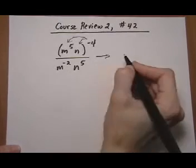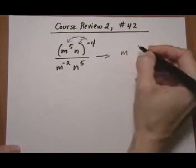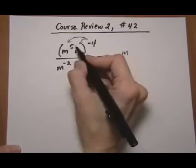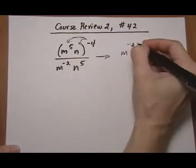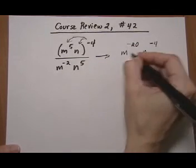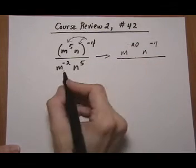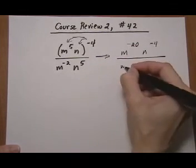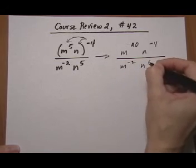So distributing that exponent we get m to the, power to power means multiply, 5 times minus 4 is minus 20, then n to the minus 4. And keep the denominator as it is, m to the minus 2, n to the 5.